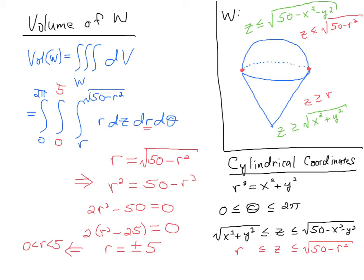And then I just start solving this thing. And I get r as a plus or minus 5. Now since radius is a positive quantity, that means that r will be bounded between 0 and 5. And I now have my limits of integration for r.